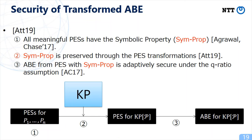The last fact is that Attrapadung and Chase show that we can construct ABE schemes from a pair encoding scheme with the symbolic property, which is adaptively secure under the q-type assumption. So we can achieve ABE schemes for KP of P which are adaptively secure under the q-type assumption.